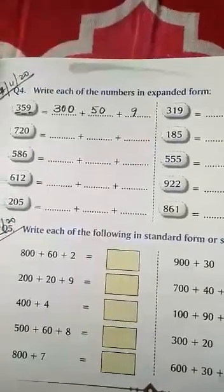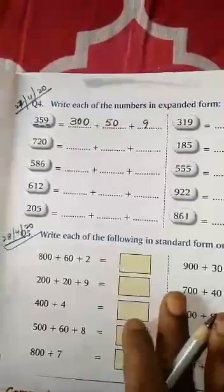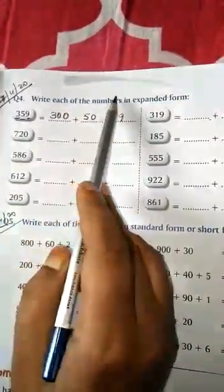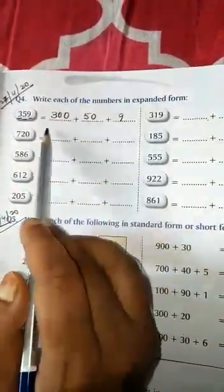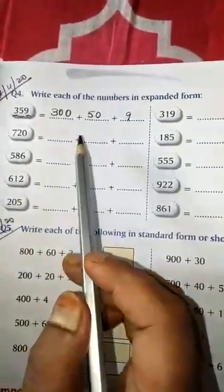Children, yesterday I gave you homework. I hope you have done it. So first, let's check the homework. Children, your homework was to write each of the numbers in expanded form. Given in short form, you have to expand.